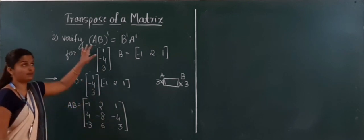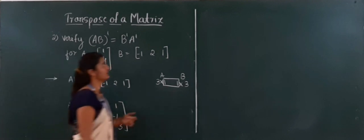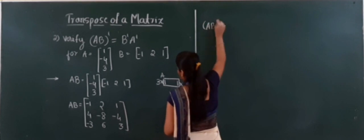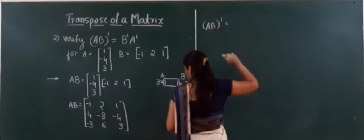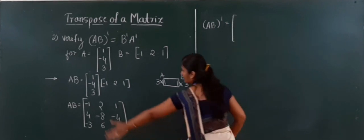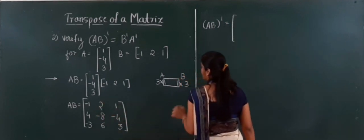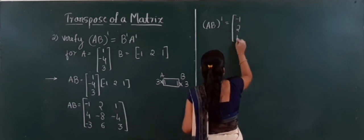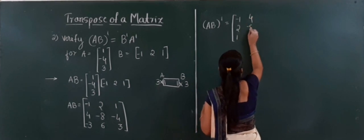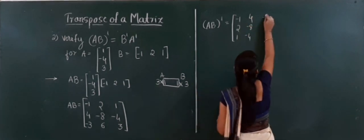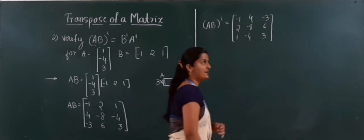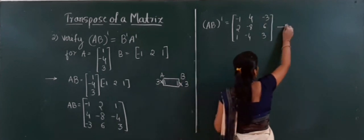Now we need (AB) dash — the transpose of AB. Writing rows of AB as columns: first row minus 1, 2, 1 becomes the first column; second row 4, minus 8, minus 4 becomes second column; third row minus 3, 6, 3 becomes third column. This is our (AB) transpose — call it A.